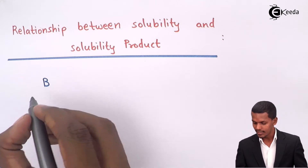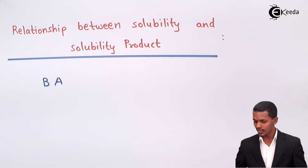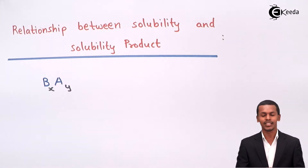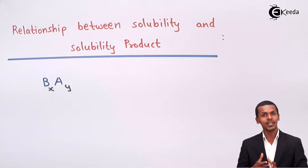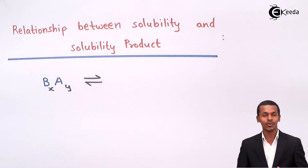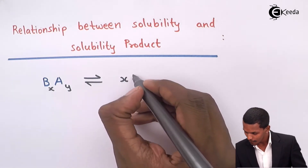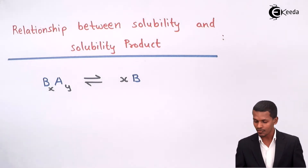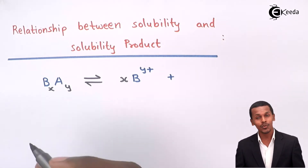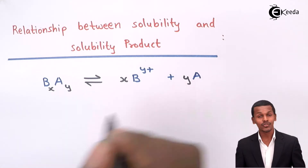Suppose I take a general example: a sparingly soluble salt written as B_x A_y. Now if it dissociates, it will produce x moles of B with a charge of y-plus, and similarly y moles of A with a charge of x-minus.